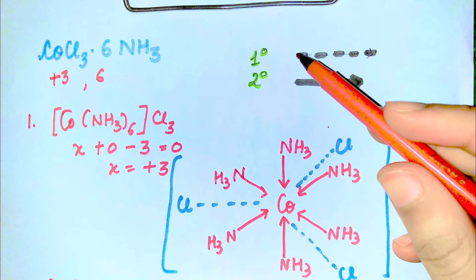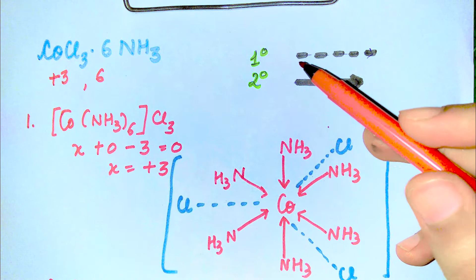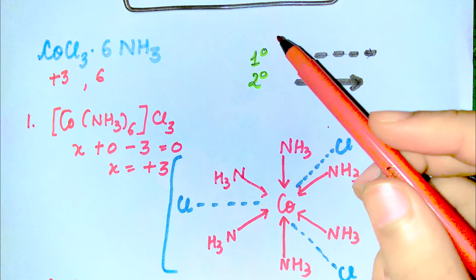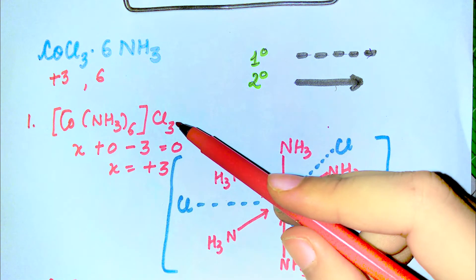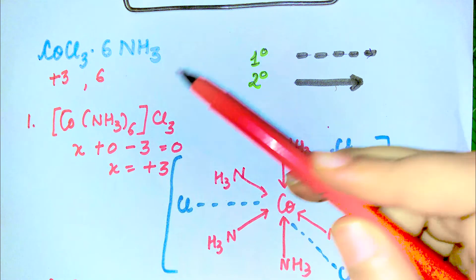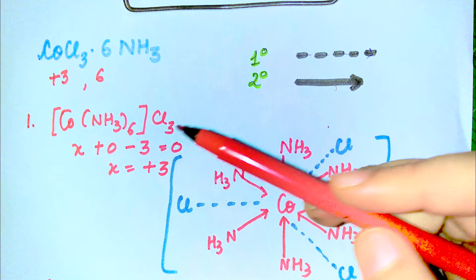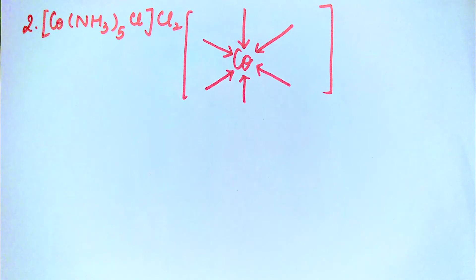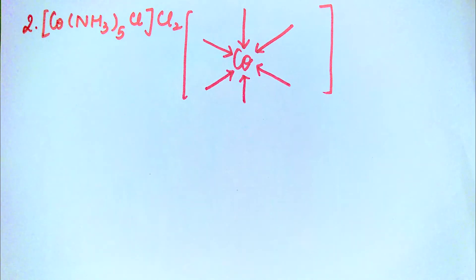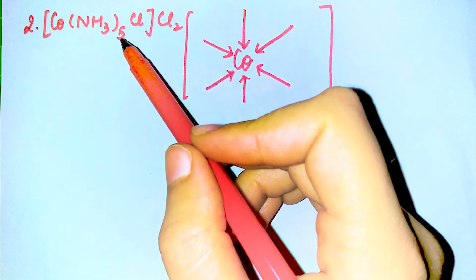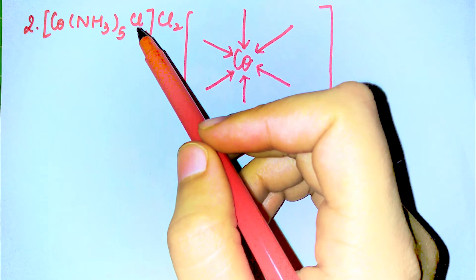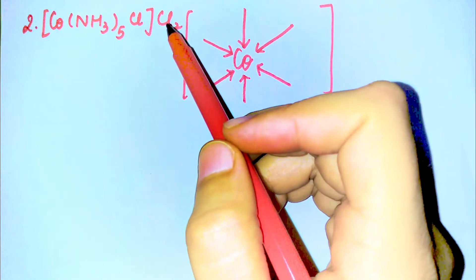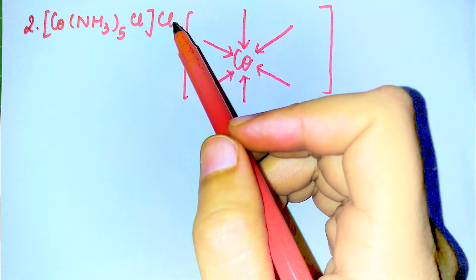Primary valencies are those which are outside the coordination sphere, and secondary valencies are those which are inside the coordination sphere. Now let's look at the second type of Tessert's compound. There are four types of compounds. In the second type, five ammonia molecules are inside the coordination sphere, one chloride is inside the coordination sphere, and two chlorides are outside the coordination sphere.